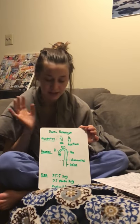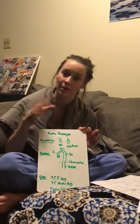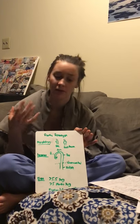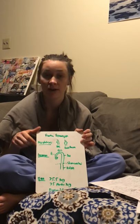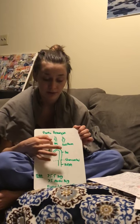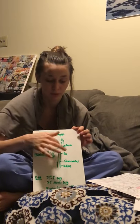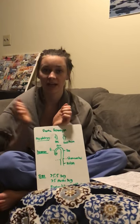Starting with aortic aneurysms — you can have aneurysms elsewhere but they happen frequently in the aorta as it's a large vessel prone to these kinds of things. There are two types of morphology: saccular, which is just a ballooning off of the vessel, or fusiform, which is a full dilation of the vessel.